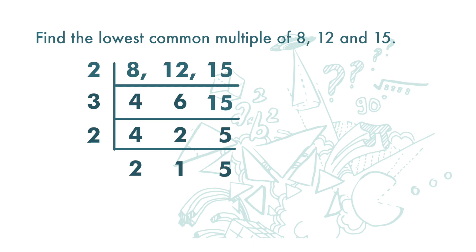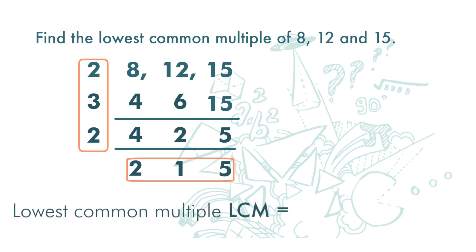To find the lowest common multiple LCM, we multiply all the numbers here on the left-hand side and all the numbers here at the bottom. So lowest common multiple LCM is 2 times 3 times 2 times 2 times 5 equals 120. 120 is the lowest common multiple of 8, 12, and 15.